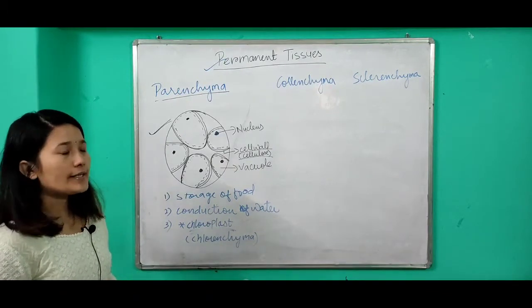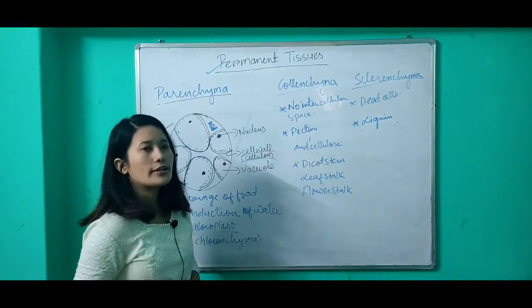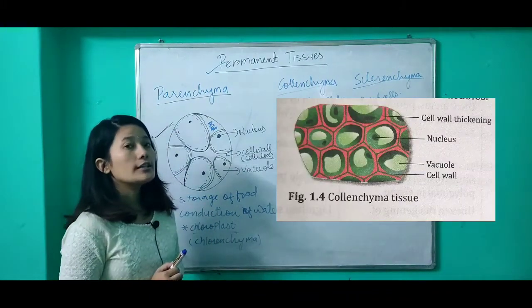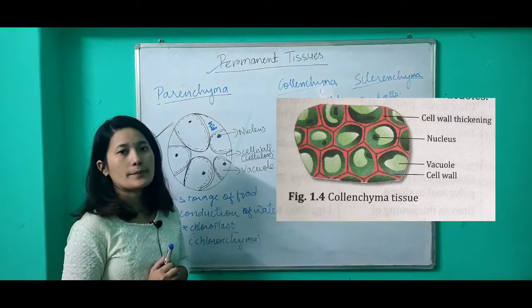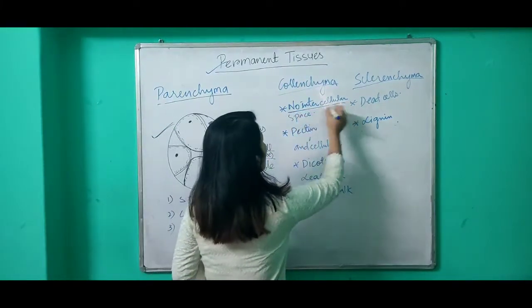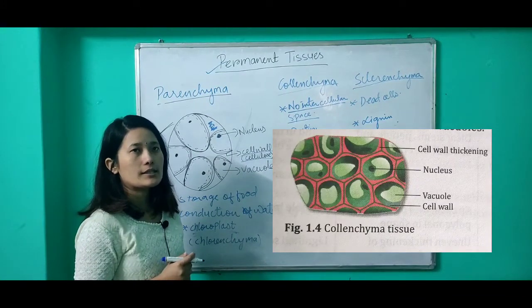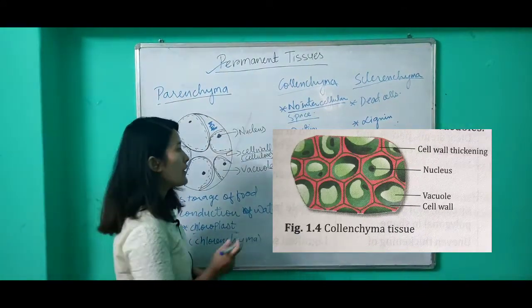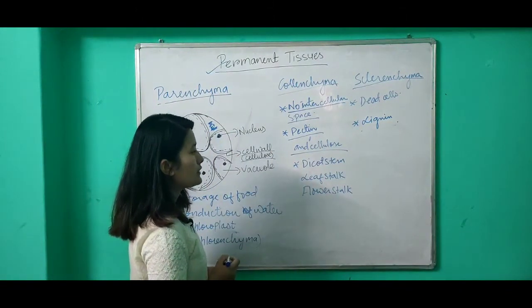Now, looking at the structure of colenchyma cells — as shown in the book and alongside — colenchyma cells are more or less oval in shape and there is no intercellular space between them; they are compactly packed. If you look at the walls of colenchyma cells, the corners of the cell walls are thickened due to extra deposition of pectin and cellulose.